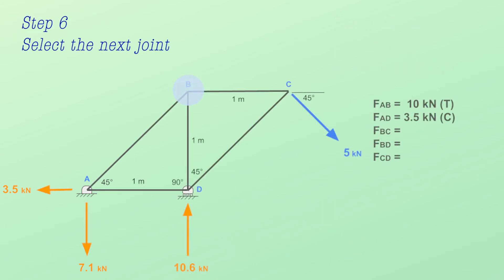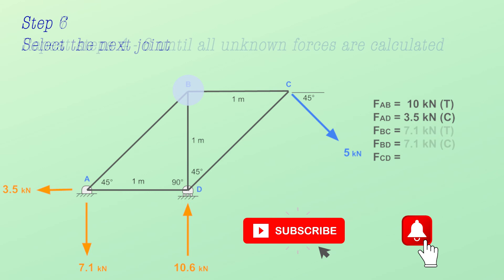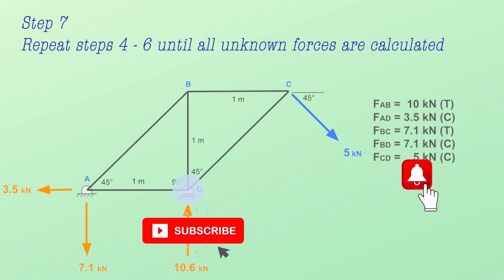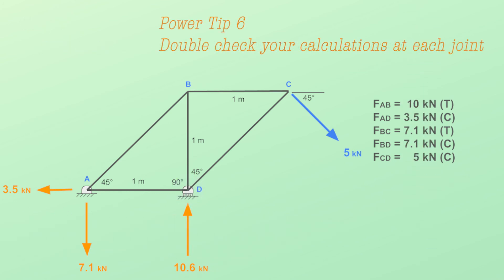Step number 6 – Select the next joint. Step number 7 – Repeat steps 4-6 until all of the unknown axial forces are calculated. Power tip 6 – Double-check your calculations as you analyze each joint. This will save you from having to redo your calculations since all errors will carry over to future calculations.